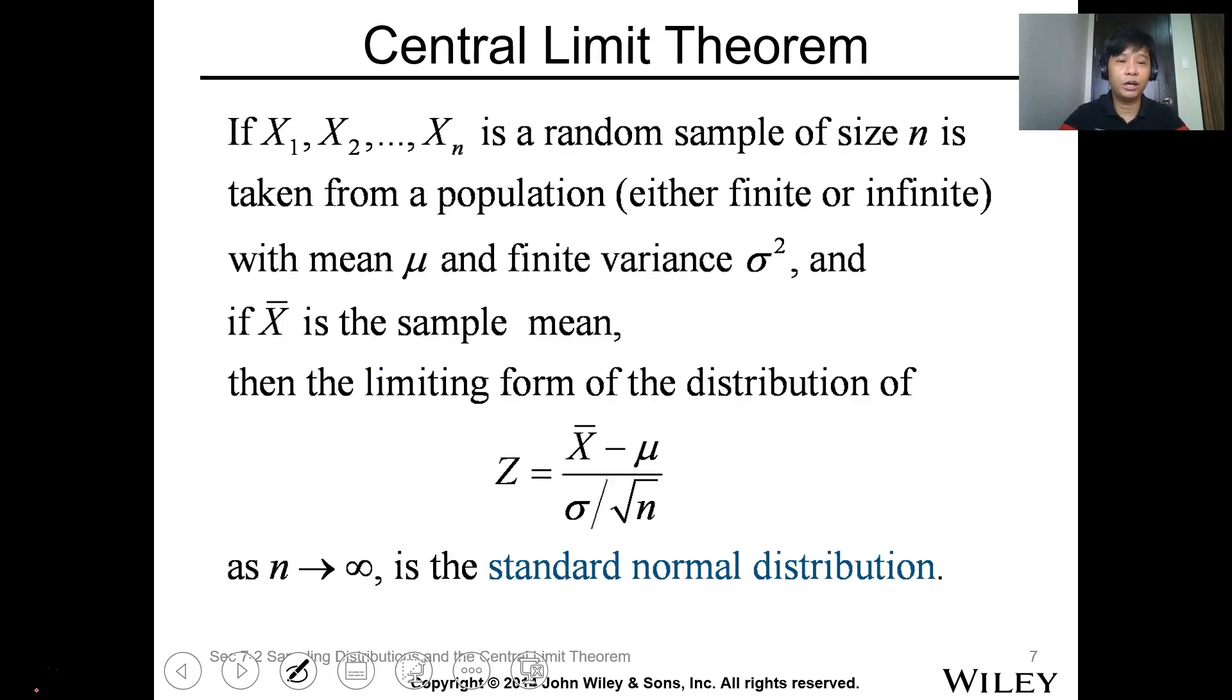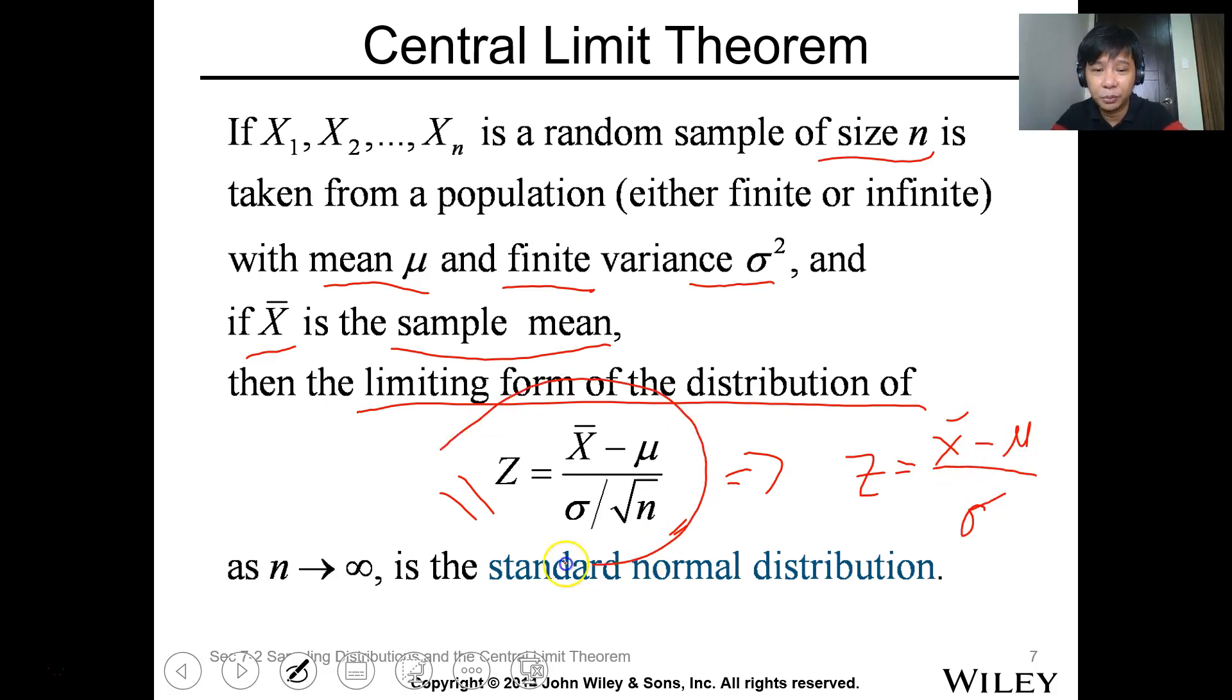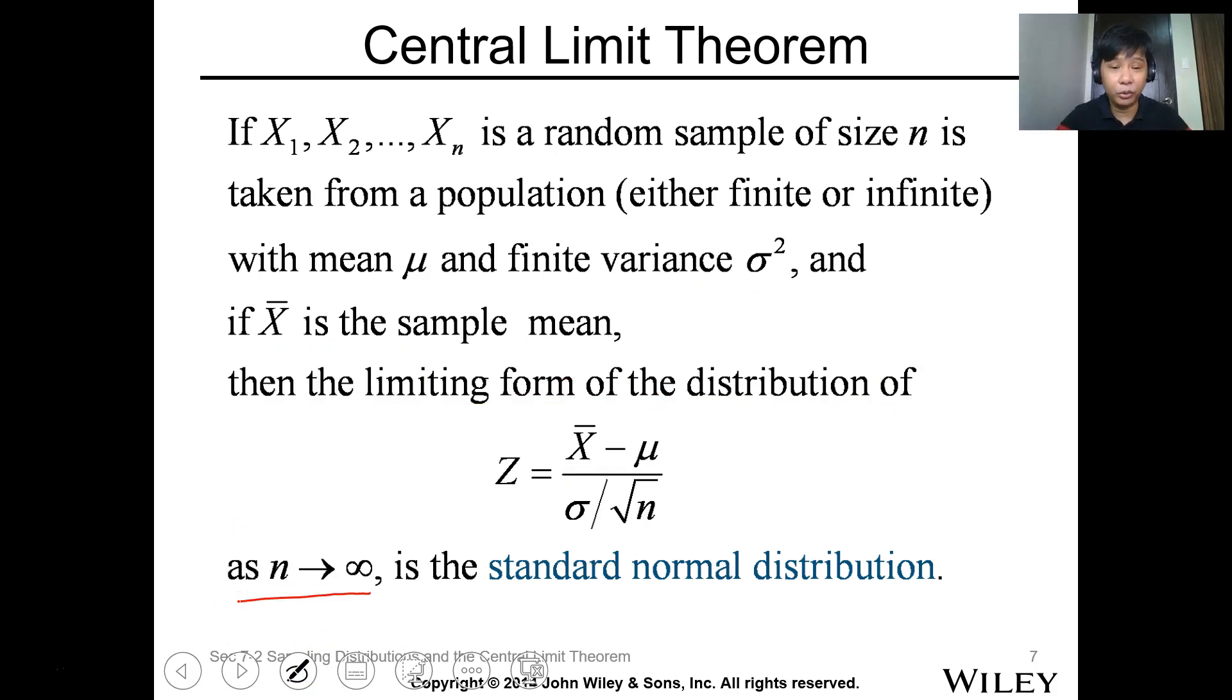So let's have the central limit theorem. If we have x1, x2 to xn is a random sample of size n, taken from a population with mean value of mu and a variance of sigma squared, which is a finite value, and your x bar is the sample mean, then the limiting form of the distribution follows the standard normal distribution with z equals to x bar minus mu over sigma over square root n. And as n approaches infinity, this one follows a standard normal distribution.